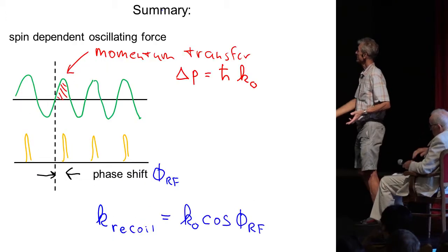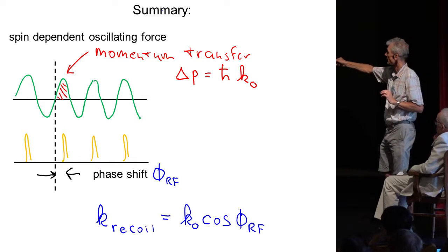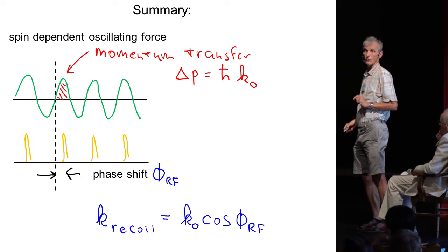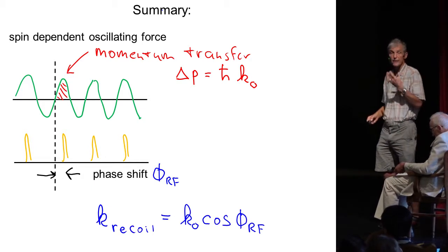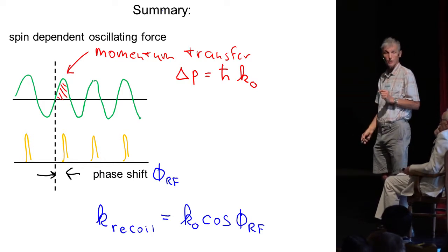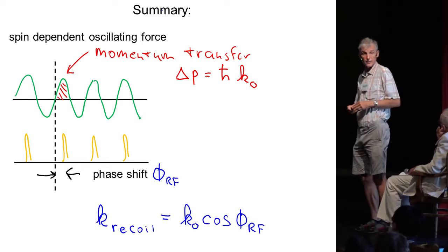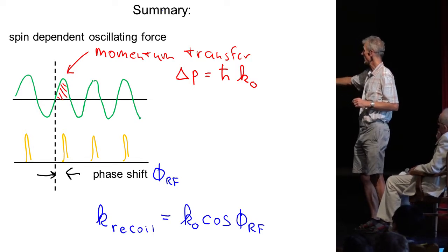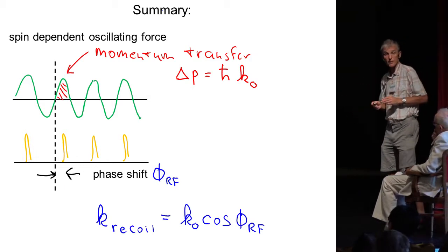So let me summarize what I have told you so far. If you have an alternating magnetic force, you have a series of RF pulses. They together can be described by a radio frequency photon, which has an adjustable recoil. The maximum recoil is given by the momentum transfer during half a cycle of the magnetic force period. And the sign and the magnitude of the recoil depends on the phase shift between the RF pulses and the magnetic forces.